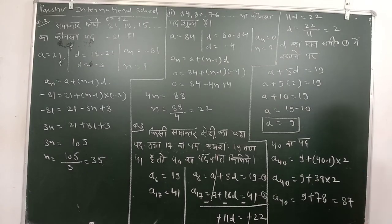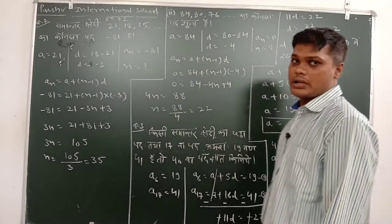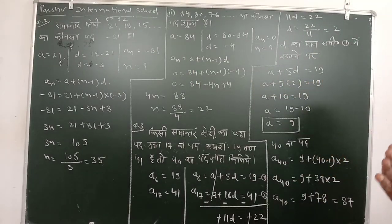Matlab, 35 ve number par is pad kaun sa hoga? Minus 81 pad hoga. Minus 81, 35 ve pad par minus 81 hoga.